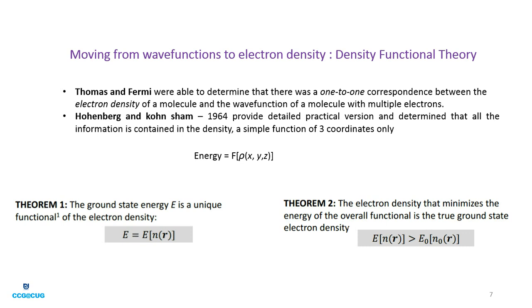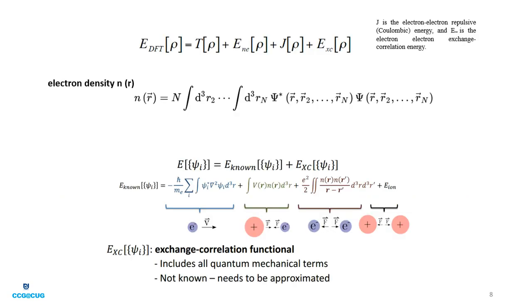Once we know the exact electron density, we know the nuclear positions and the number of electrons — it uniquely determines the external potential and the charges and positions of the nuclei. In more detail, the DFT energy equals: kinetic energy as a function of density, plus nucleus-electron interaction as a function of density, plus Coulombic interactions, plus the exchange-correlation term. This exchange-correlation term is the most crucial one, and all terms require the electron density.